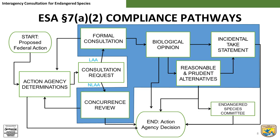A not likely to adversely affect determination will result in a letter of concurrence. A likely to adversely affect determination will result in a biological opinion. The importance of both documents is producing an assessment of the proposed action, identifying the likely stressors the action will produce, and identifying the species and designated critical habitat that are likely to be affected. Because the purpose of both documents is the same, the letter of concurrence is basically a short biological opinion.